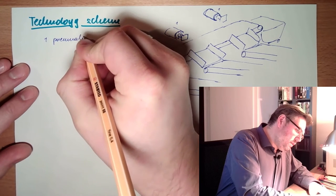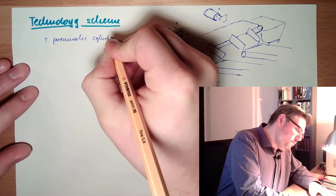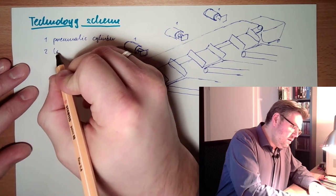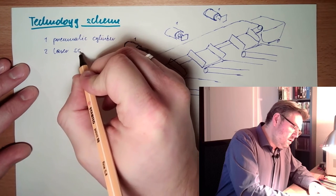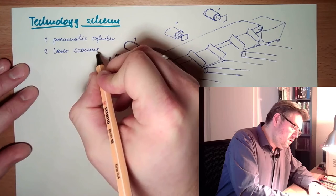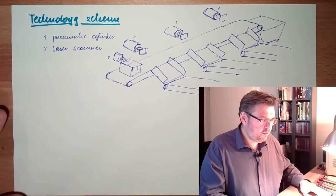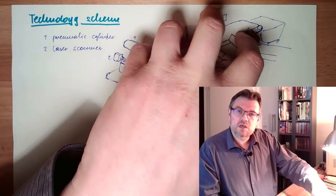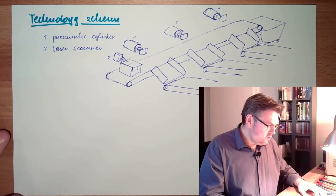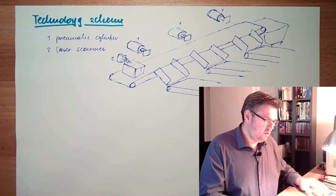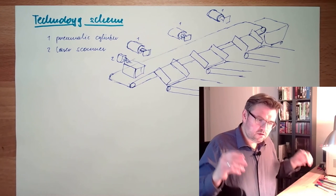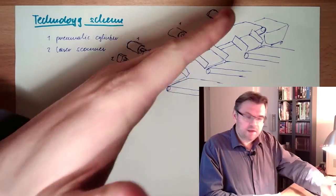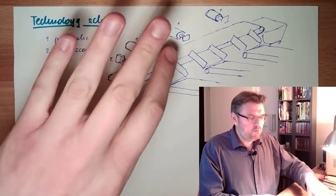So this is already something, a technology scheme. I can add numbers: pneumatic cylinder, laser scanner, and so on. I can put numbers and make a description. With the help of this technology scheme, it should be clear what this process is doing. There are no standardized symbols and so on. It might be more or less abstract. It can be with color, it can be zoomed in.